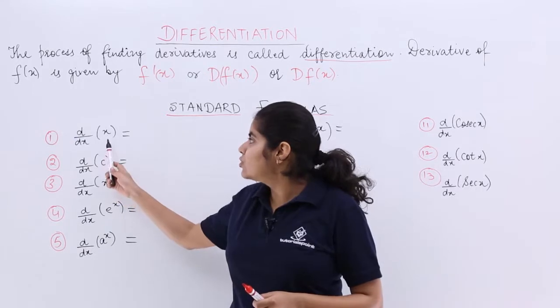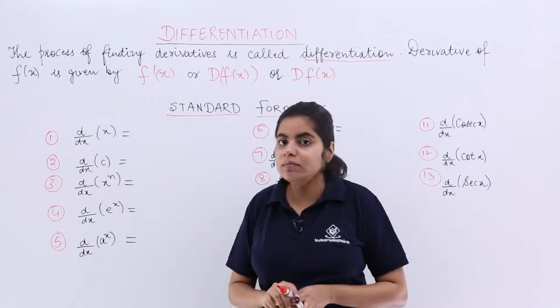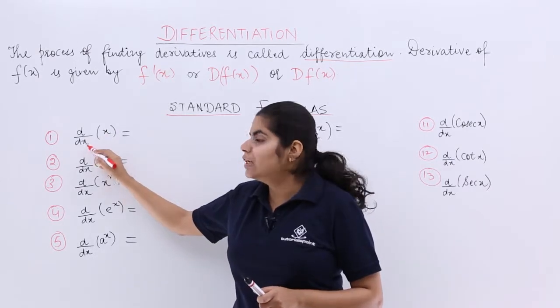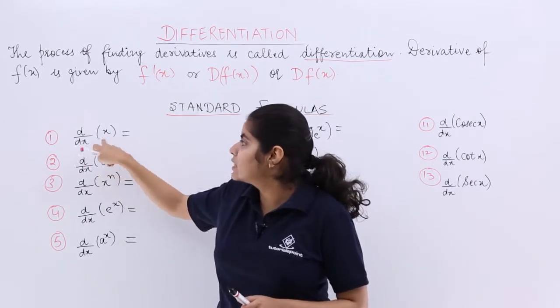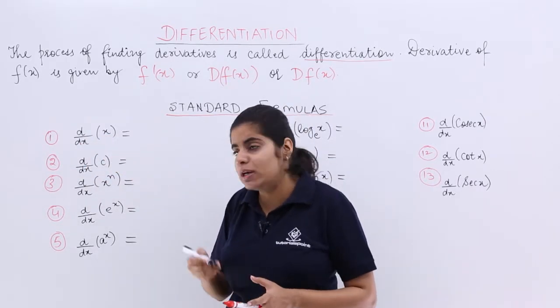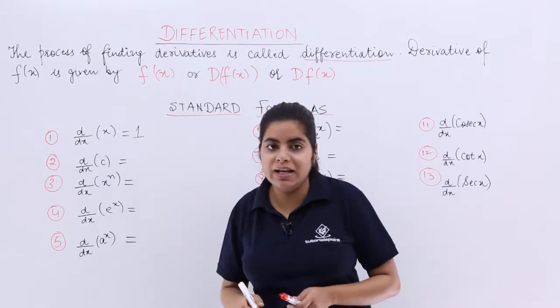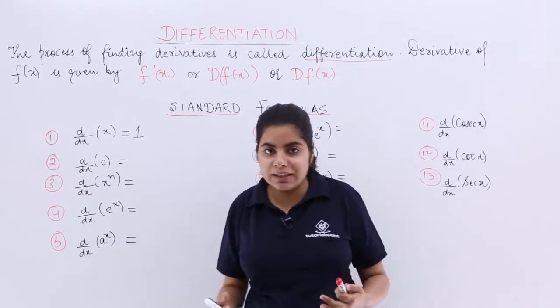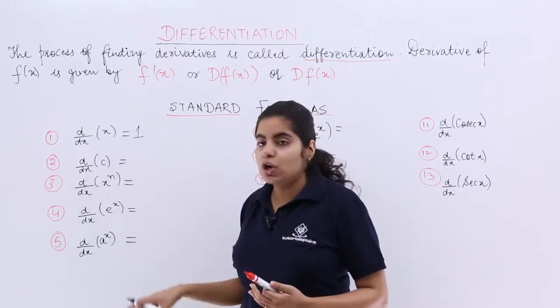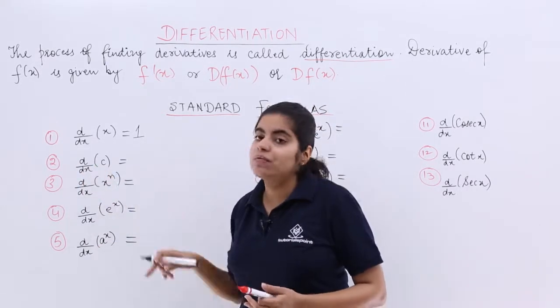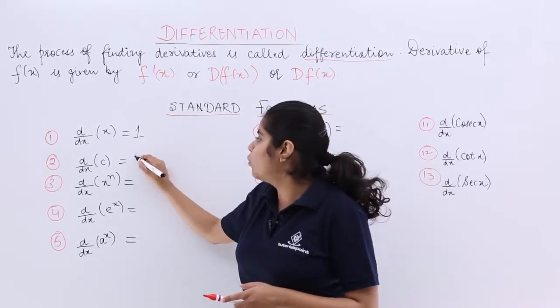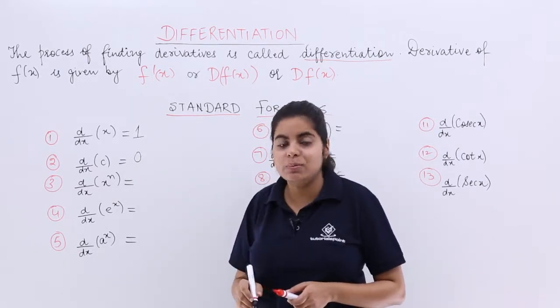So the first into picture is d by dx of x. Now x is a variable. Variable when differentiated with respect to the same thing, that means dx is here, x is here, or dy is here, y is here. What is the answer to it? Its differentiation is 1. This is all that you have done in class 11. We are just memorizing the things, remembering, revising. So c is the constant, d by dx of c. c is what, constant? Now what is the differentiation of a constant? It is nothing but 0. Constant with respect to a variable.